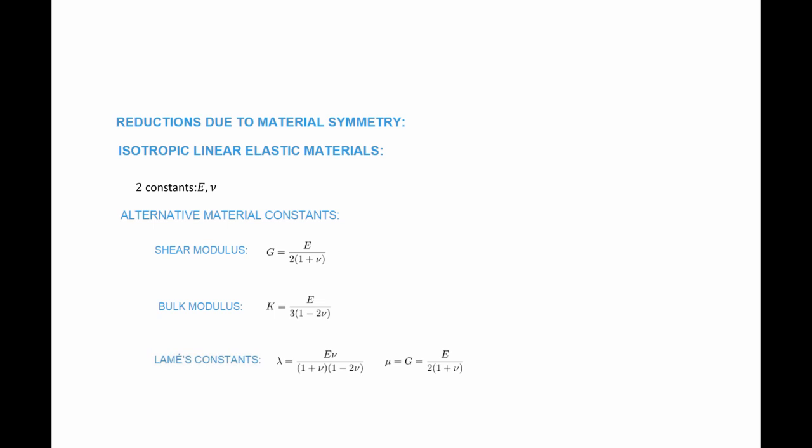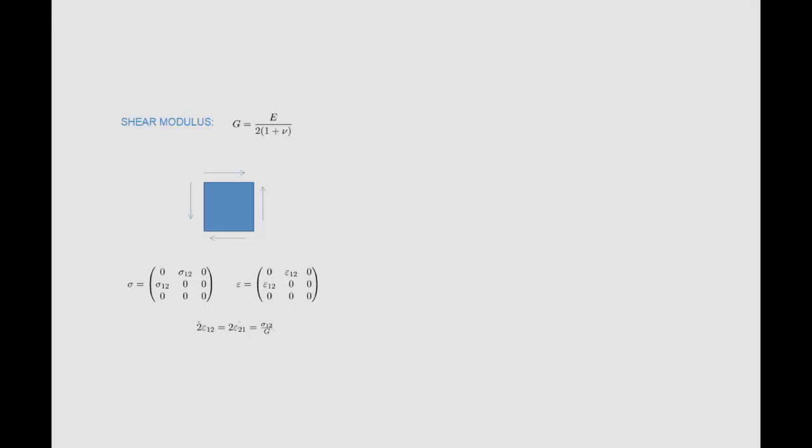There are alternative material constants that can be used instead of E and Poisson's ratio: these are the shear modulus, the bulk modulus, and Lamé's constants. The shear modulus G equals E divided by 2(1 plus Poisson's ratio). Let's see where this relationship comes from.